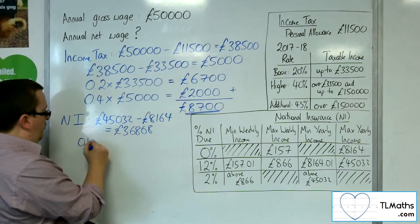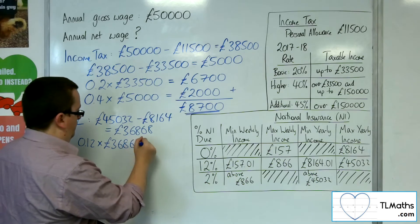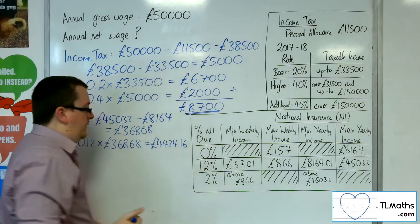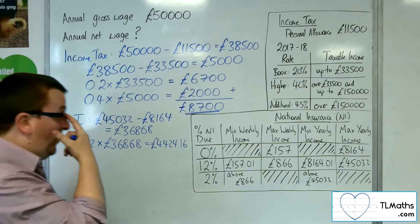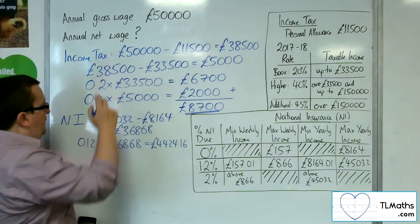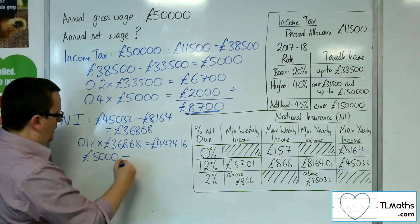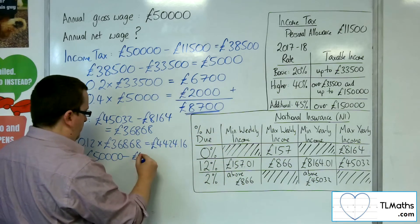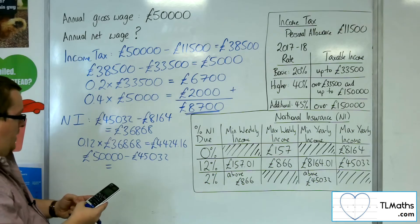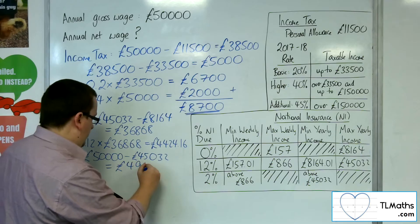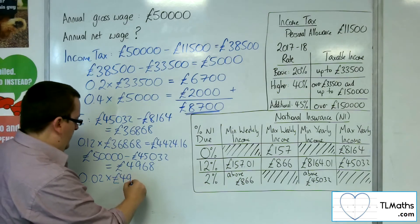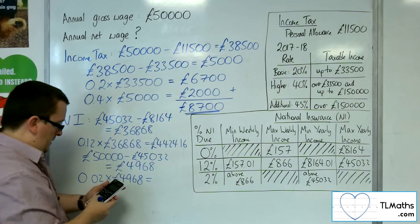So I'm going to get charged 12% on that — times by 0.12 — and I get £4,424.16. But that's not all, because anything above £45,032 I get charged 2%. So £50,000 take away £45,032 gets me £4,968, and I'm going to get charged 2% on that. So 0.02 times £4,968 is £99.36.